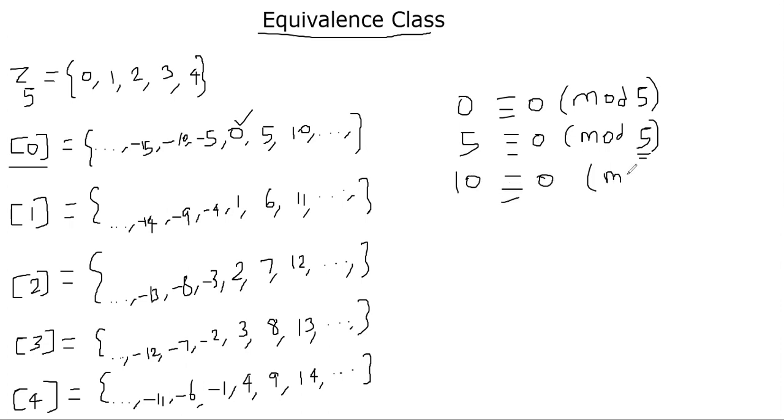So what you do in the equivalence class is basically take your number - in this case, 0 - and enumerate all the numbers that are congruent to 0 mod 5. So all of these numbers: 0, 5, 10, everything that you write here, are the elements of the congruence class [0].